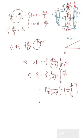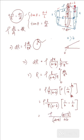So R = rho * L / (pi * (a − b)) times (1/b − 1/a). Taking the LCM gives (a − b) / (ab), and the (a − b) terms cancel, leaving the final result: R = rho * L / (pi * a * b). This is the resistance of a conductor with a uniform variation in cross section from a smaller radius b to a larger radius a.